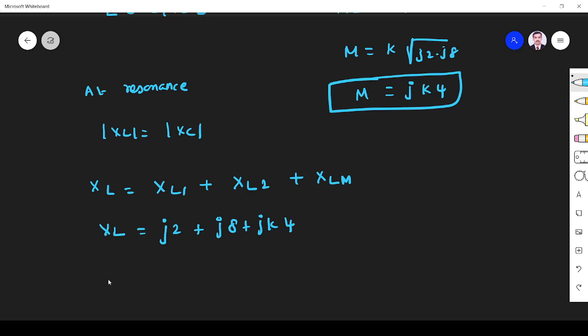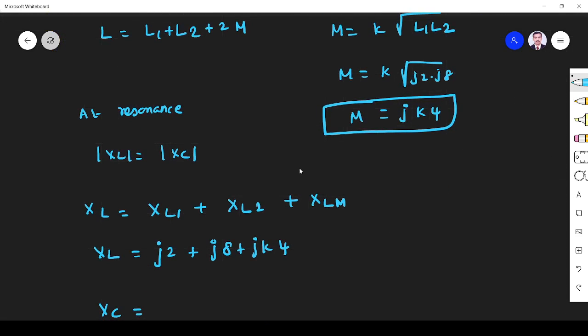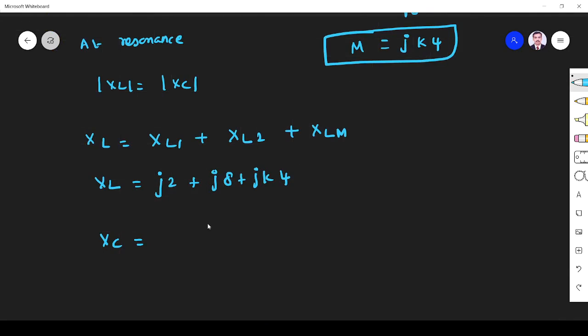XC is given as -j12. Substituting these values, under resonance |XL| = |XC|.